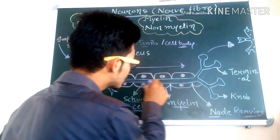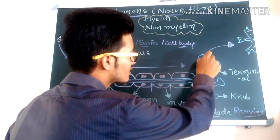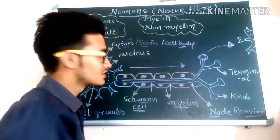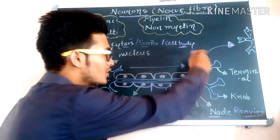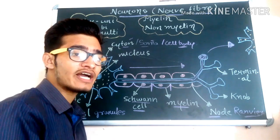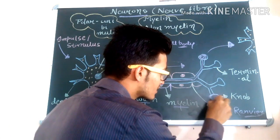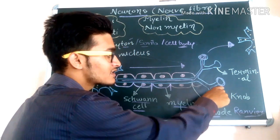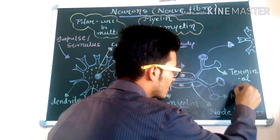The axon portion terminates at the axon terminal. Since the axons are terminating and ending at this point, this particular part is known as the axon terminal, where the axon forms a bulb-like structure known as the synaptic knob.